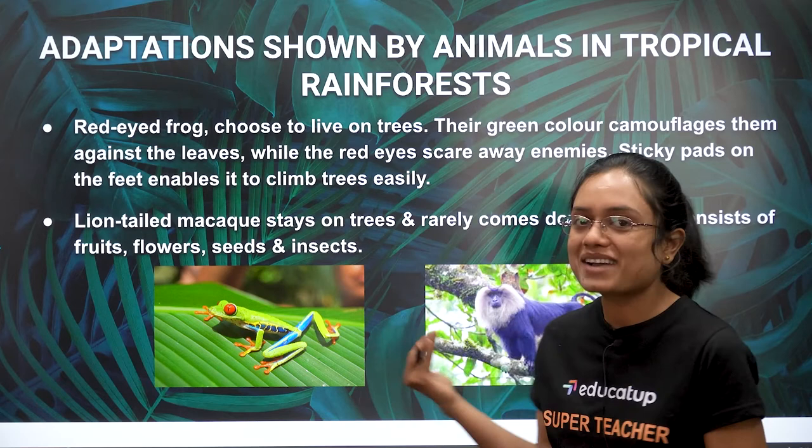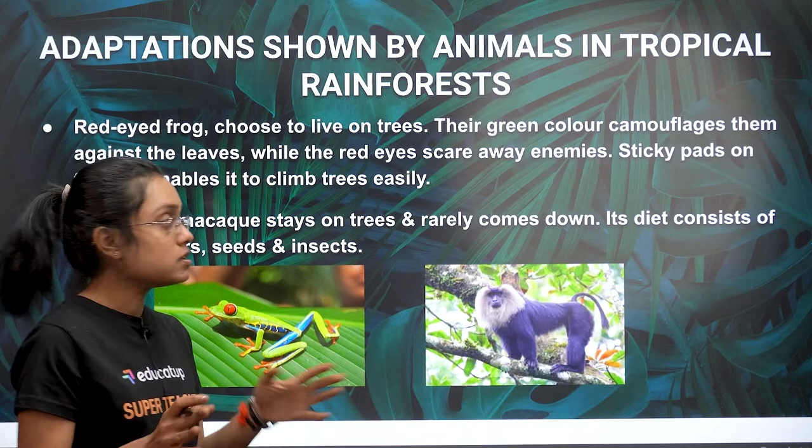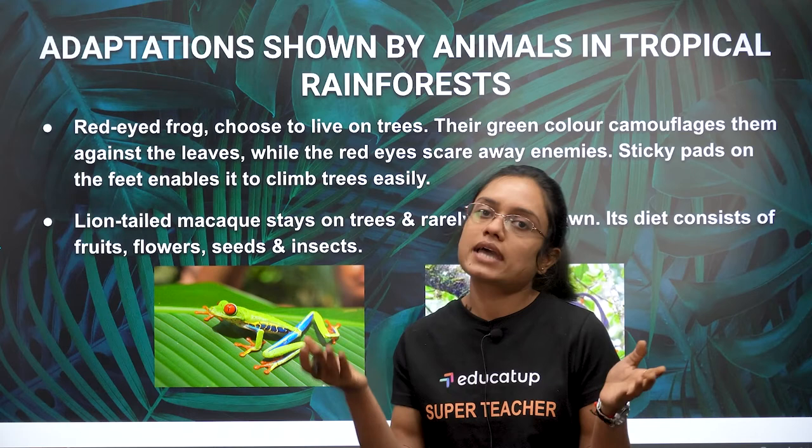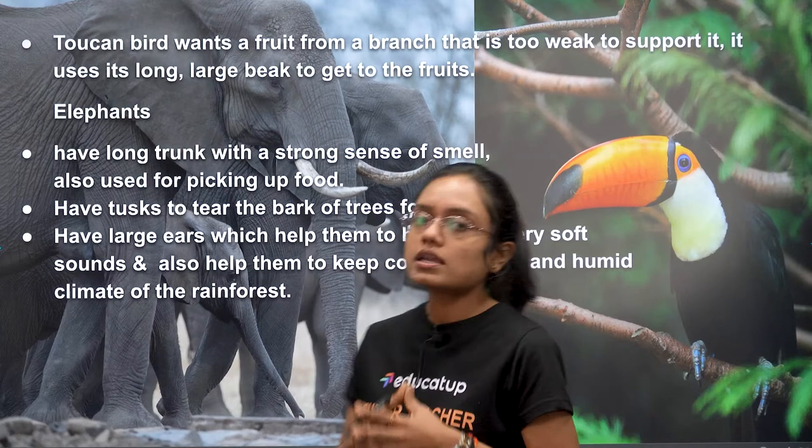The lion-tailed macaque always stays on trees and rarely comes down. Its diet consists of fruits, nuts, flowers, seeds, and insects — whatever is available in the tree canopy.